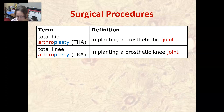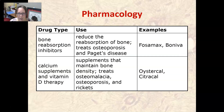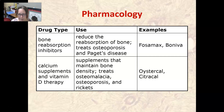Now let's talk about pharmacology terms. Bone reabsorption inhibitors reduce the reabsorption of bone to treat osteoporosis and Paget's disease; examples are Boniva and Fosamax. Calcium supplements and vitamin D therapy are supplements that help maintain bone density and can treat osteomalacia, osteoporosis, and rickets.